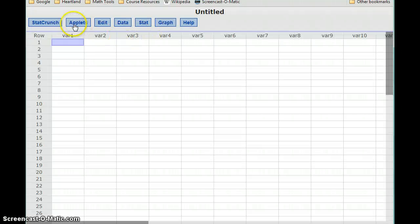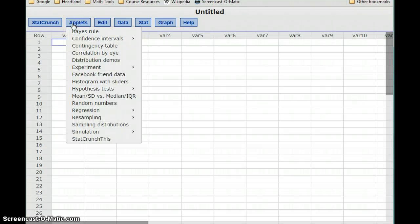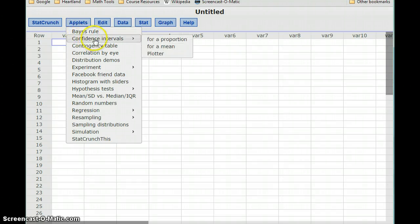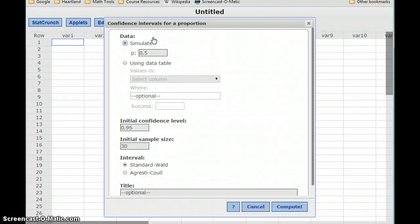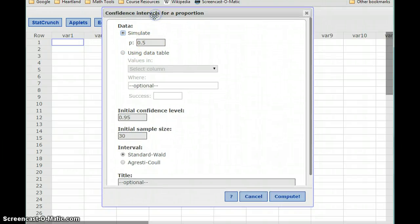Let me get logged in here. So StatCrunch has some different interactive tools built into it under this applets menu. So we're going to look at confidence intervals for a proportion. We're going to simulate a scenario where the actual population proportion is 50%. So that's what it would be for flipping a coin. And we're going to click compute.